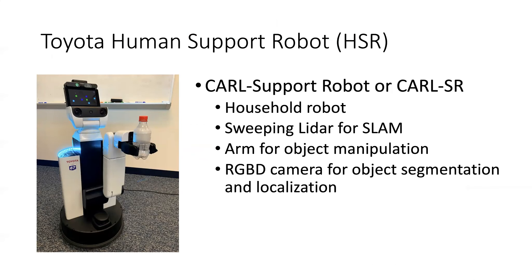Some of you familiar with our lab know we have this robot from Toyota called the human support robot — we call it the HSR or support robot. It's designed to work in households. It has a sweeping LIDAR for SLAM — simultaneous localization and mapping — a very common method in robotics to build maps of environments. It has an arm for manipulating objects and an RGB-D camera. RGB stands for red, green, blue, and the D stands for depth, so the camera gives you three-dimensional information about how far objects are.